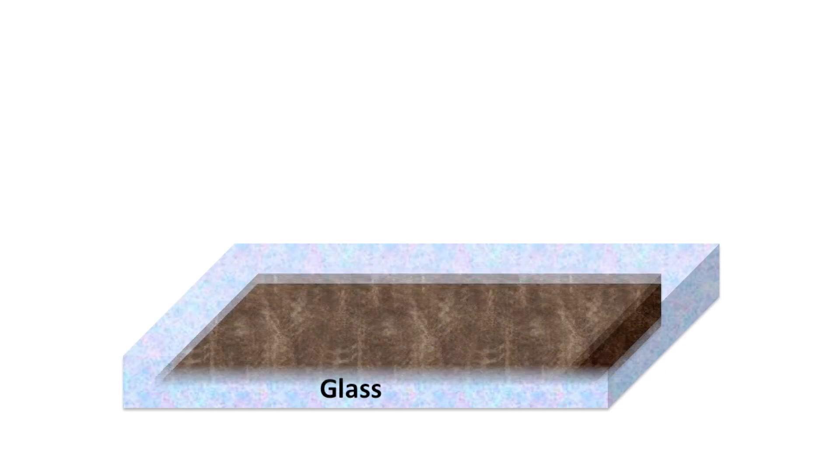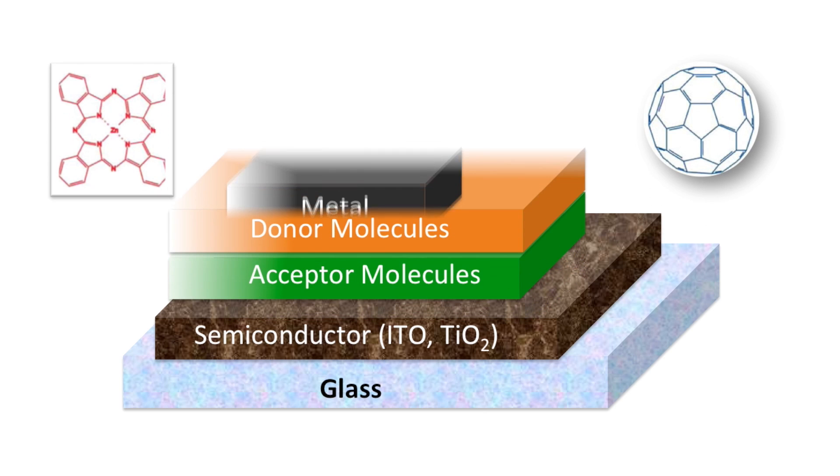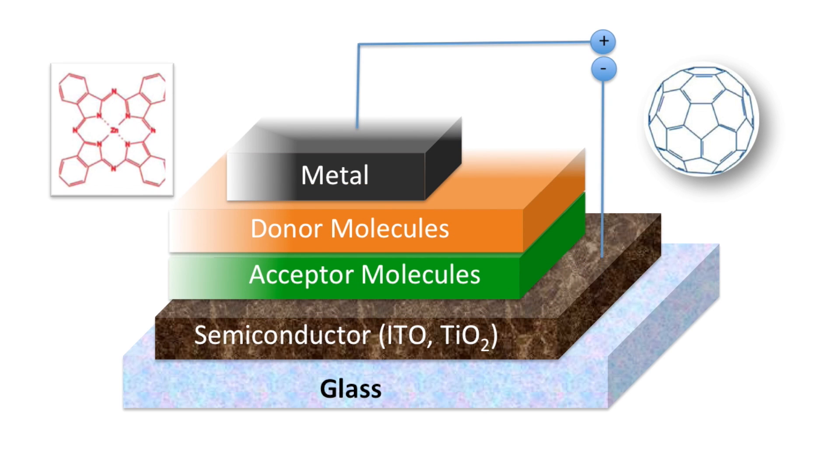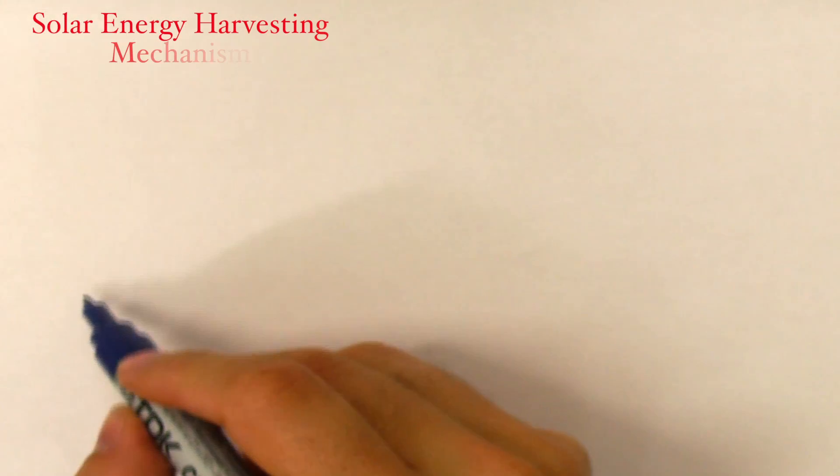An organic solar cell is built by packing two types of organic molecules, donor and acceptor, between two electrodes: a semiconductor electrode and a metallic electrode.